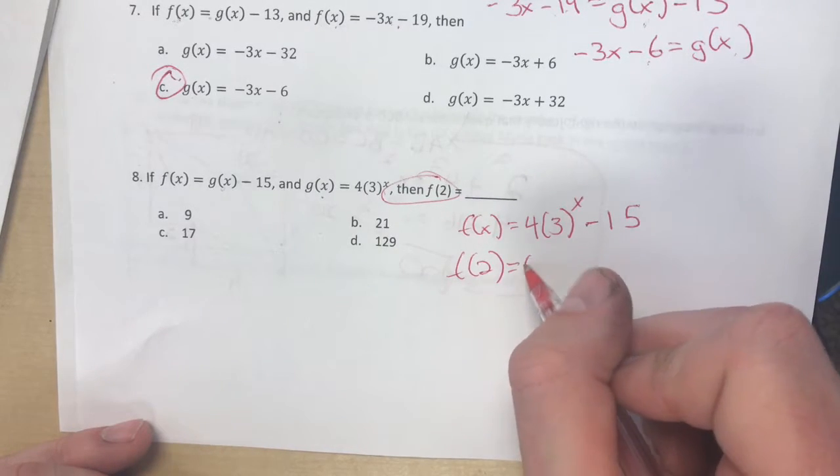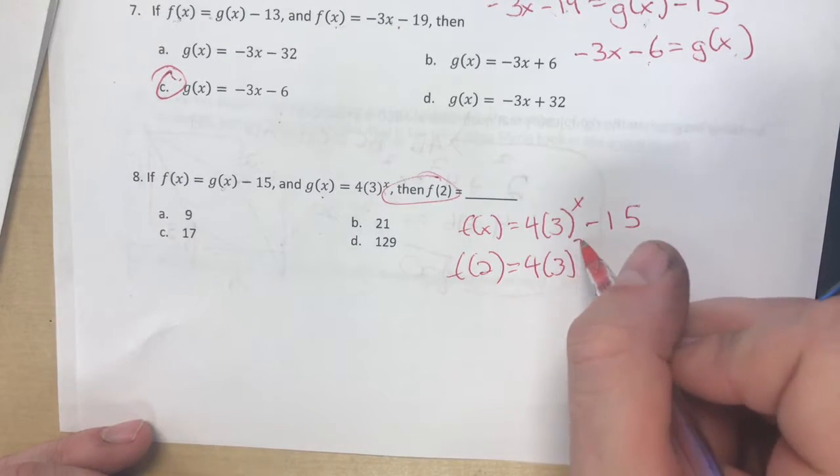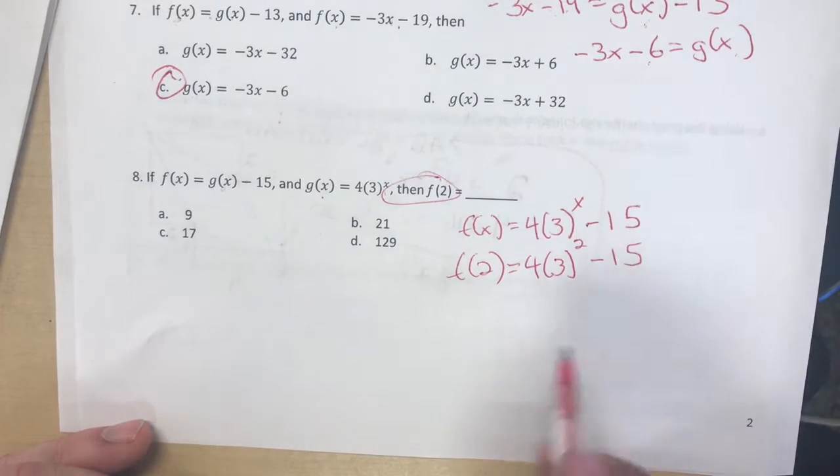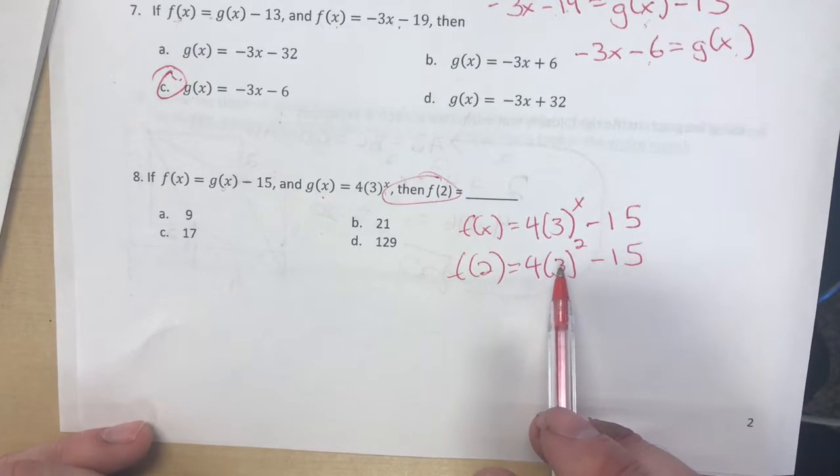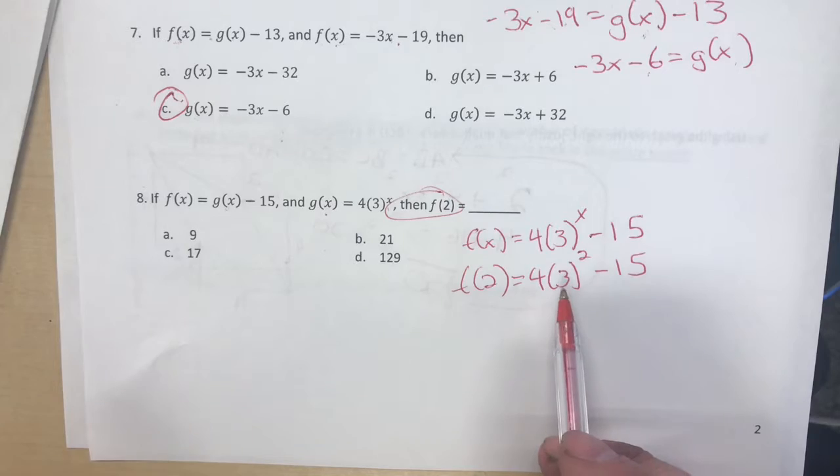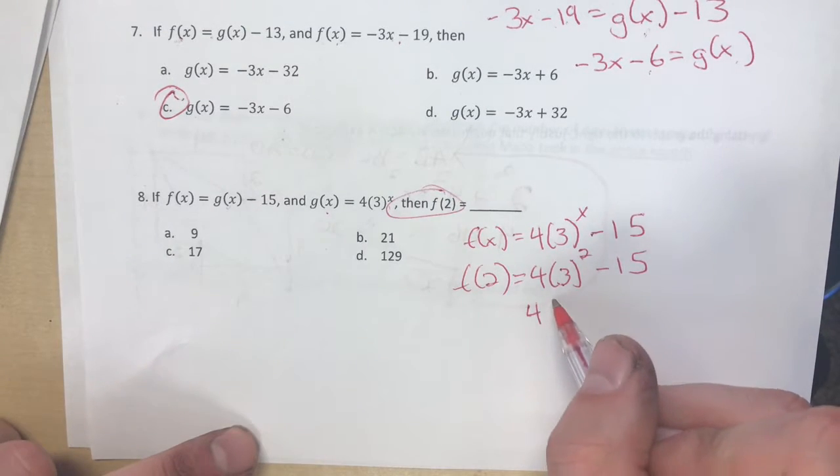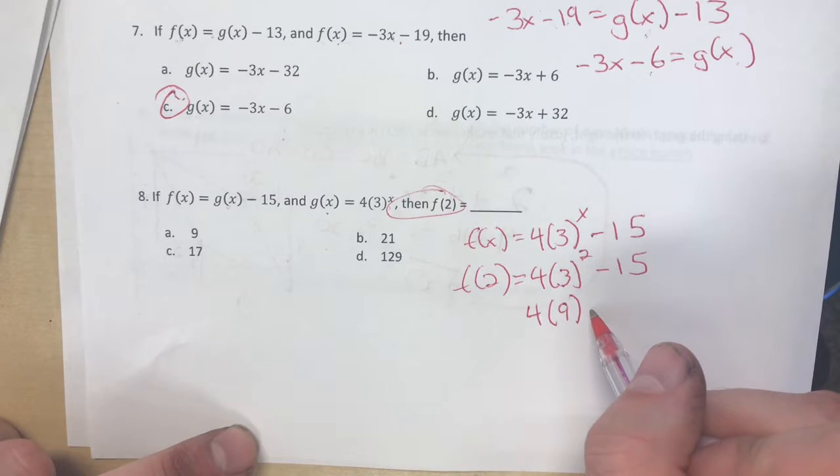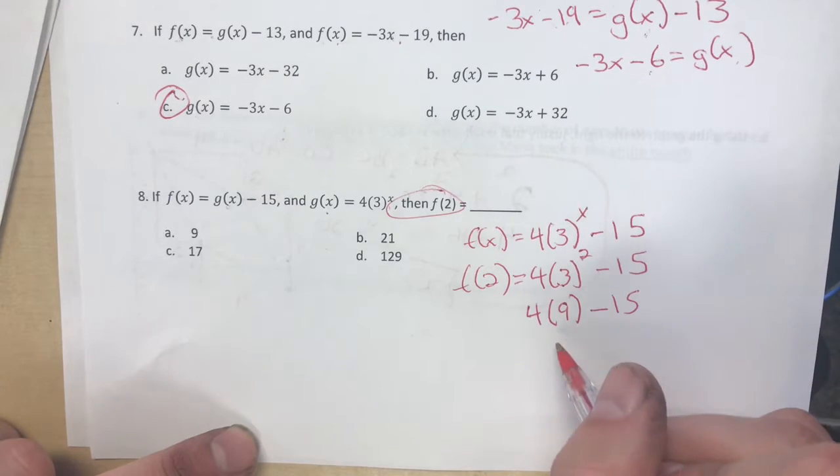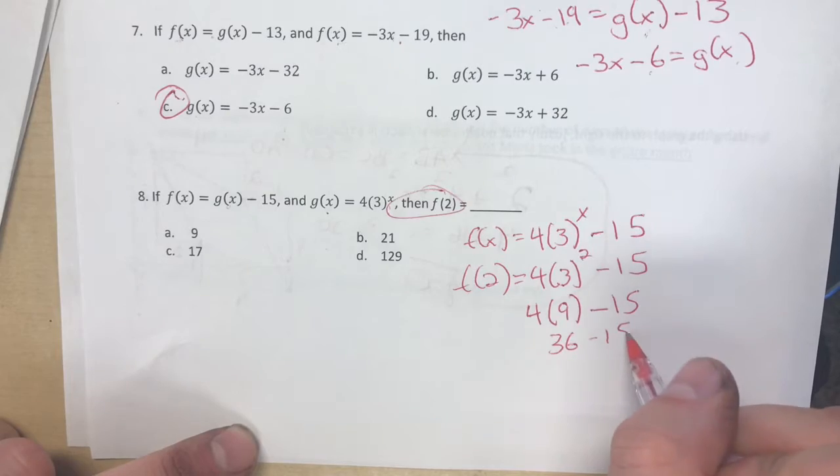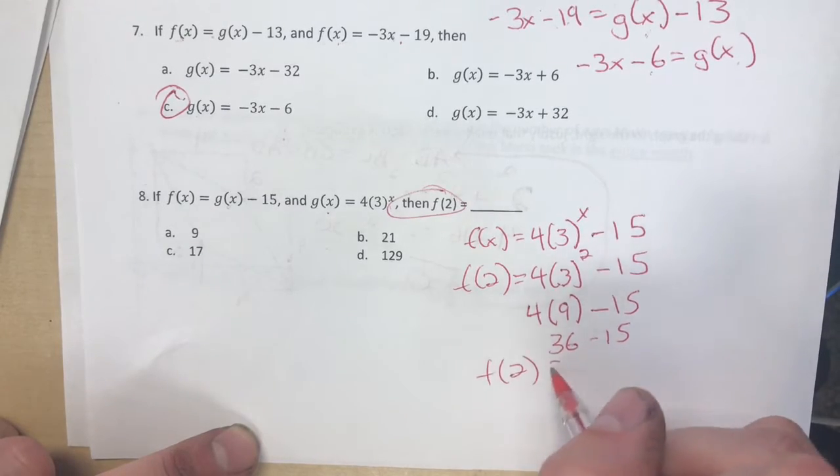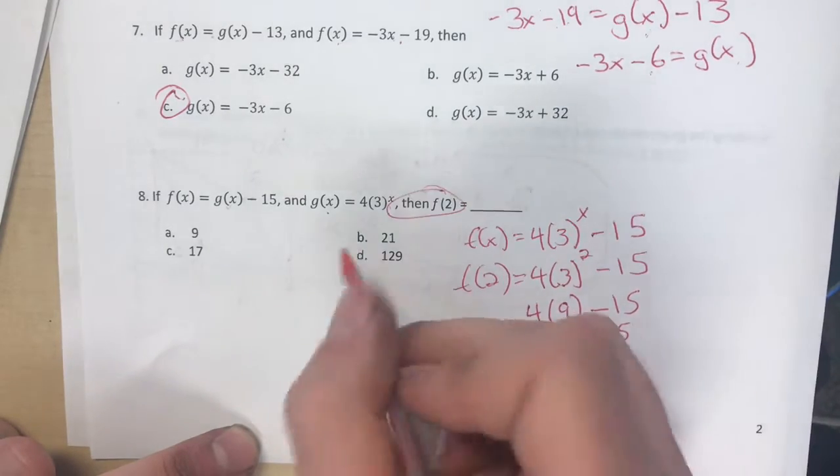So f(2), all that means is you have to plug in 2 to this. So we would have, f(2) would be 3 squared, which is 9. So we would have 4 times 9 minus 15. And then we would have 36 minus 15. And we would finally know that f(2) is equal to 21.